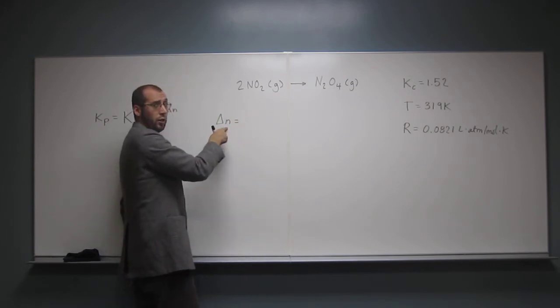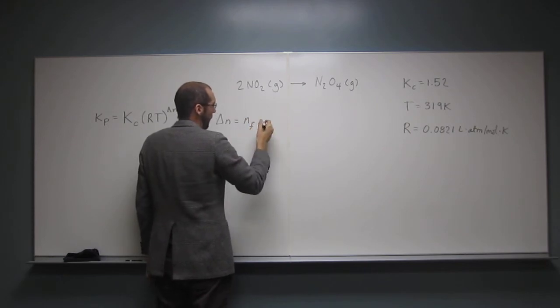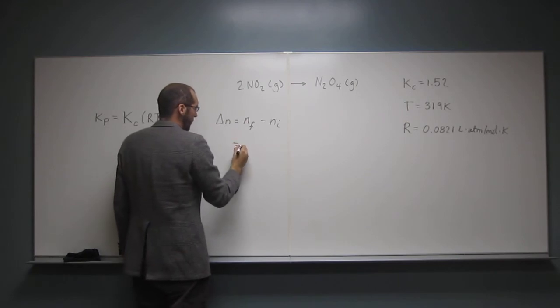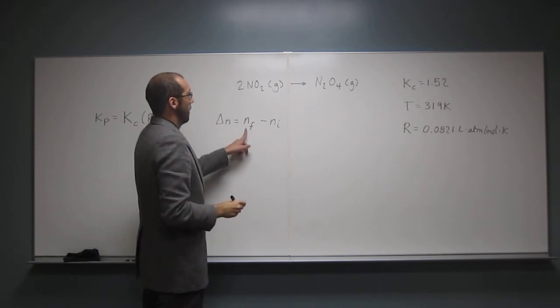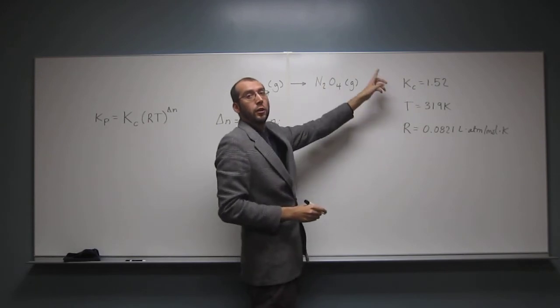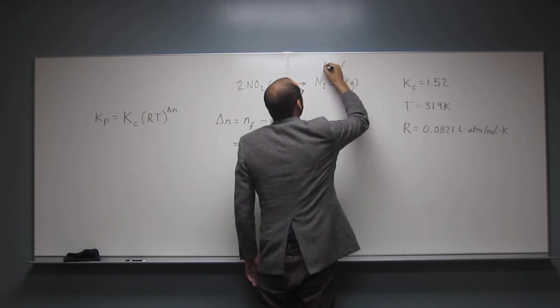So just like any change, it's going to be the final minus the initial. So the number of moles final, well, the total number of moles on this side of the reaction equation is just 1. So 1 mole of gas, right?